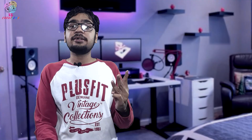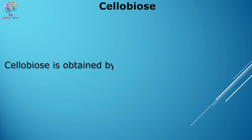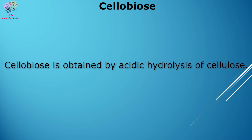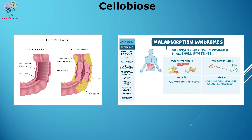Other disaccharides such as maltose, gentiose, and cellobiose are found in plants. Maltose is used in the malting process of barley to make beer. Cellobiose is obtained by acidic hydrolysis of cellulose and can be used as an indicator carbohydrate for Crohn's disease and malabsorption syndrome.